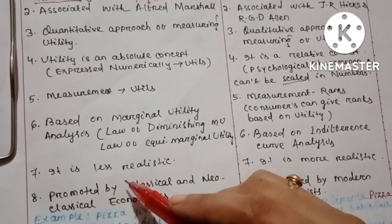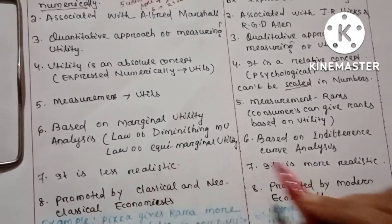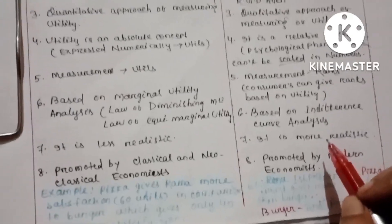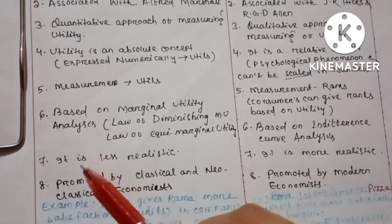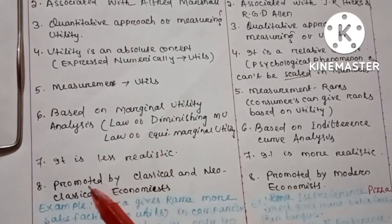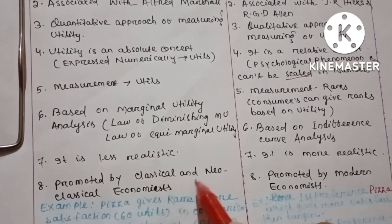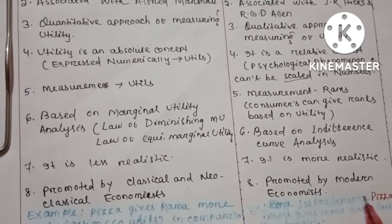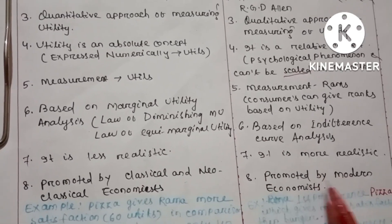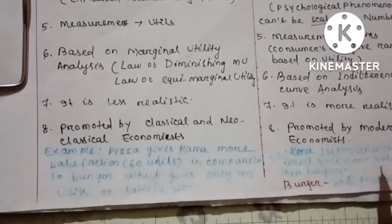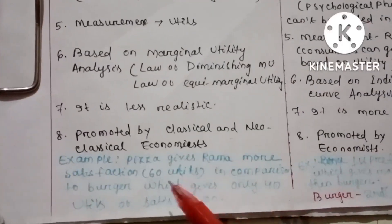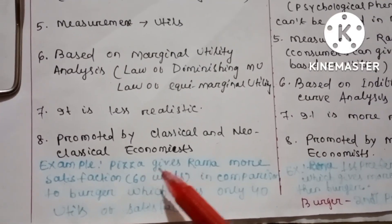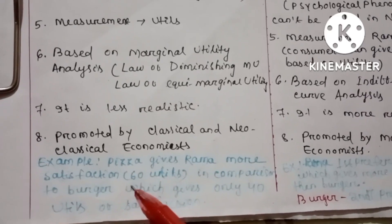Cardinal utility analysis is considered less realistic, while ordinal utility analysis is considered more realistic. Cardinal utility analysis is promoted by classical and neoclassical economics, whereas ordinal utility analysis is promoted by modern economics.